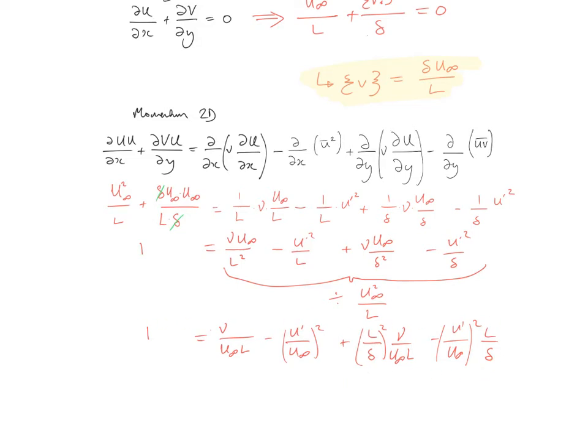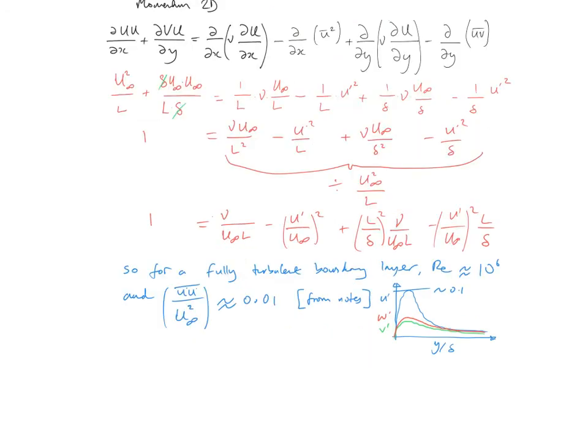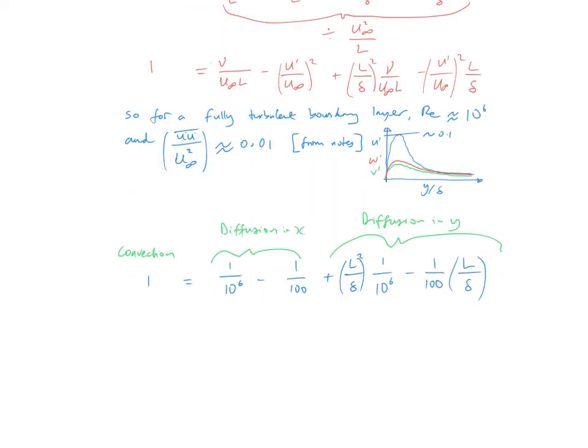As follows. And we start to recognise some terms here. So u infinity times L divided by nu is a Reynolds number, and u prime divided by u infinity squared is our non-dimensionalised Reynolds stress in the streamwise direction. And so we can start to put some numbers into this order of magnitude analysis. So if we say that for a fully turbulent boundary layer with a Reynolds number of 10 to the 6, it's likely that our Reynolds stress non-dimensionalised by the free stream velocity is going to be about 0.01.